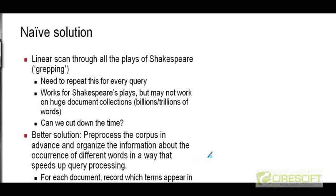The simplest possible solution you could think of is to use the Unix grep command or some similar command, or write a simple script that will do a linear scan through all the plays of Shakespeare one by one. For each document that you look at, you check whether it contains the words Brutus and Caesar and whether the word Calpurnia is absent. If all three conditions hold, you return that document as part of the answer. One can easily write a script that will do something like this.